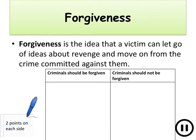The final thing we need to look at is forgiveness — the idea that a victim can let go of ideas about revenge and move on from the crime committed against them. On your piece of paper, make a table: on one side, reasons criminals should be forgiven; on the other, reasons why criminals should not be forgiven. Try to give two points on each side. Pause the video now and when you have four answers, play again.